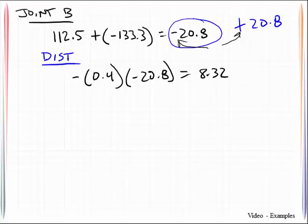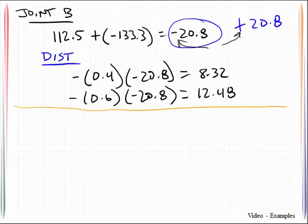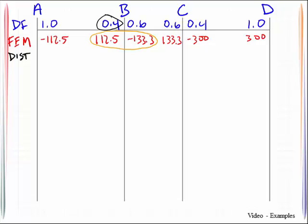Now we want to see how much gets distributed to member BC. And that will be equal to 12.48. Okay, so I have those distribution factors. That's easy enough. I will come back here and go ahead and write those in. 8.32 and 12.48.